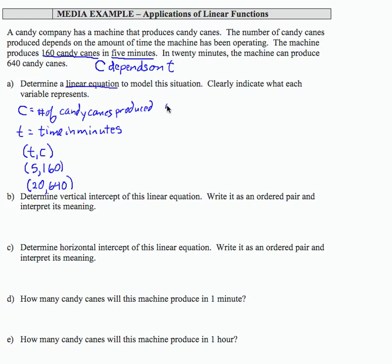The first thing we need to write a linear equation is the slope. So the slope I can find by using these two ordered pairs. So 640 minus 160 divided by 20 minus 5. That's going to equal 480 over 15, which is 32. So my slope M is 32.